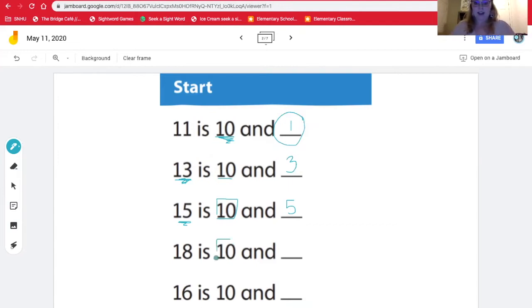Let's start with 10 and count on to 18 so we can find out how many ones we need and a 10 to make 18. So 10, 11, 12, 13, 14, 15, 16, 17, 18. So I have five, six, seven, eight ones. So 18 is 10 and eight ones.